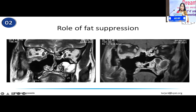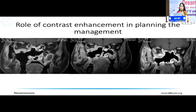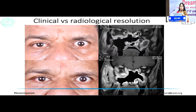This again highlights the role of fat suppression. If you have an image without fat-suppressed sequences, you won't be able to pick up that abscess. When you suppress the fat, you can figure out the area of localized abscess. Hence, contrast-enhanced fat-suppressed T1 or T2 images are your images of choice in patients with mucormycosis when they have limited disease and you're considering debridement.